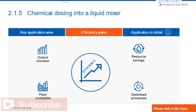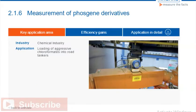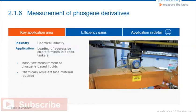The manufacturer of phosgene derivatives needs to measure the exact amount of highly aggressive and corrosive liquids when loading them into road tankers for delivery. In this case, the continuous operation of flow meters for several years is ensured based on measuring tubes made from tantalum.